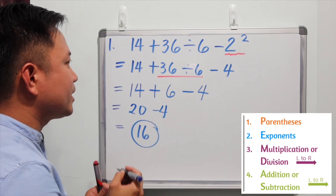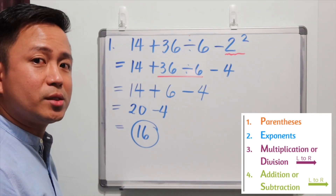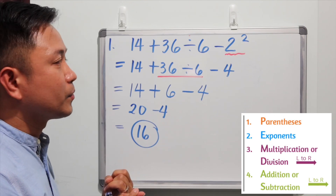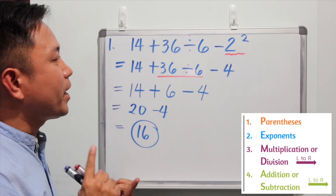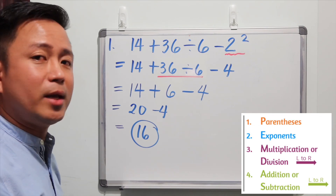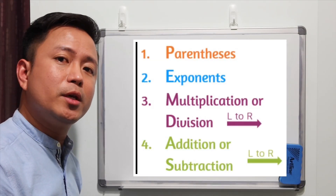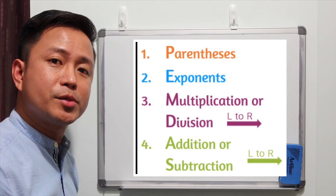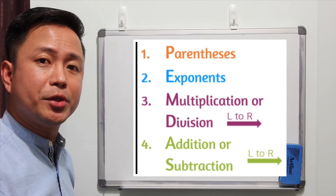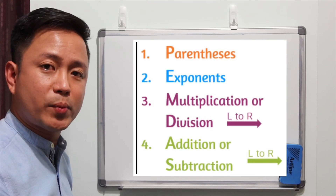So 16 is the answer using the order of operations. We simplified the exponent first, then division, then added and subtracted from left to right. American school systems usually use the PEMDAS rule: Parentheses, Exponents, Multiplication or Division from left to right, and Addition or Subtraction from left to right as well.